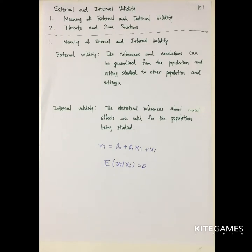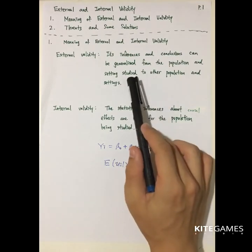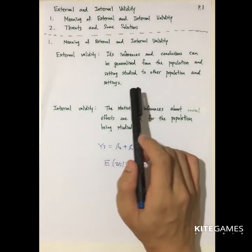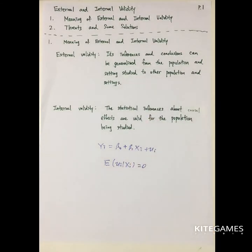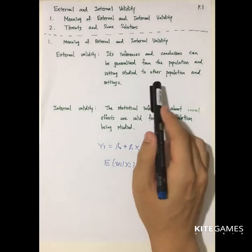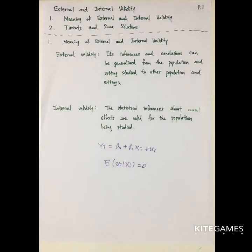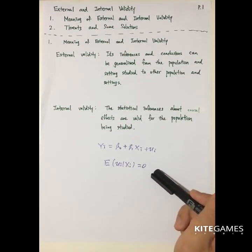The main threat to external validity is that different populations are different. For example, one university may have different characteristics from other universities, so they cannot be compared directly. The threats to internal validity mainly focus on the assumptions — specifically whether the expected value of u given x is zero. There are basically five threats.